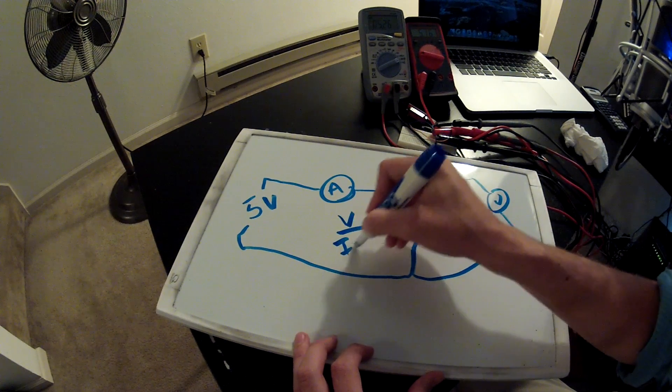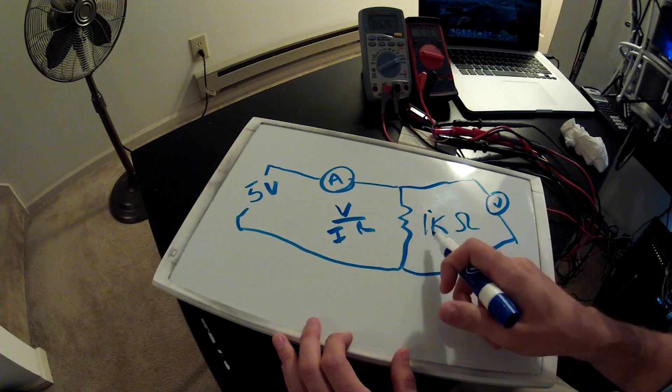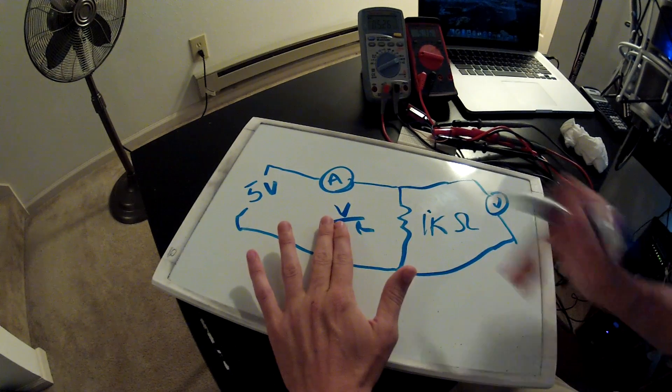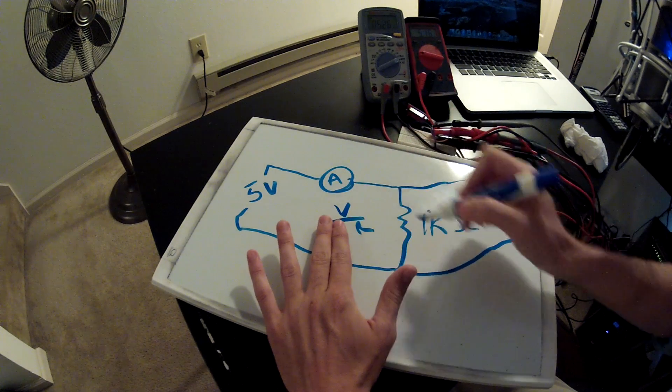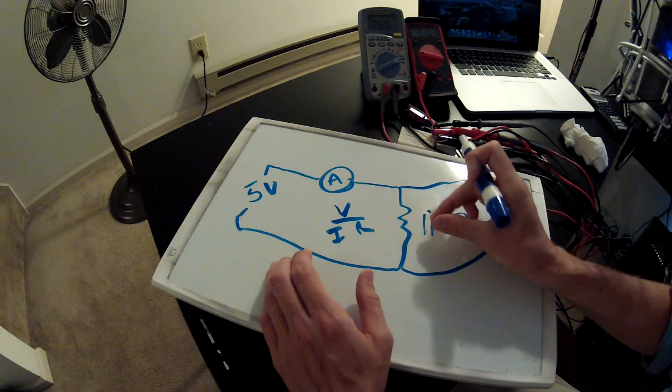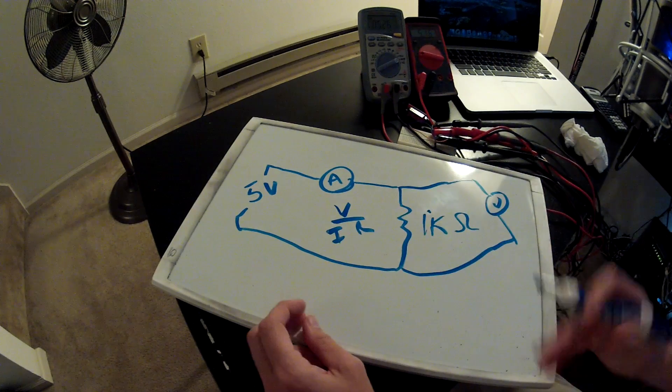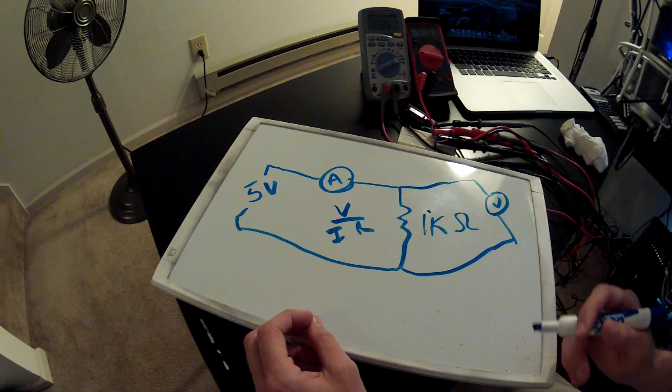we just write it here, V over I*R - we need to find current. If we put our finger over the I, the current should equal V divided by R. So 5 volts divided by 1k should give us 5 milliamps.